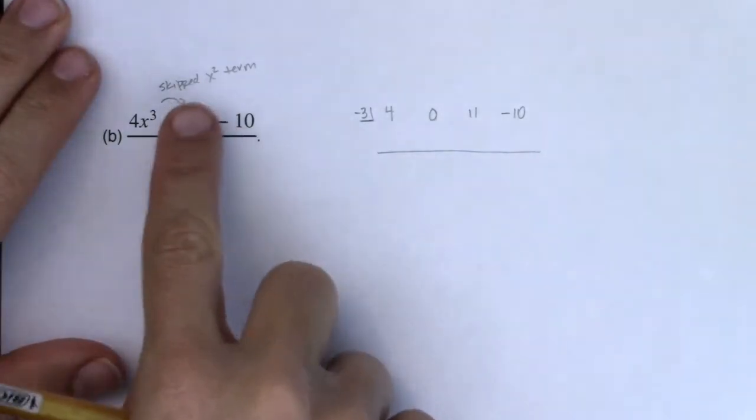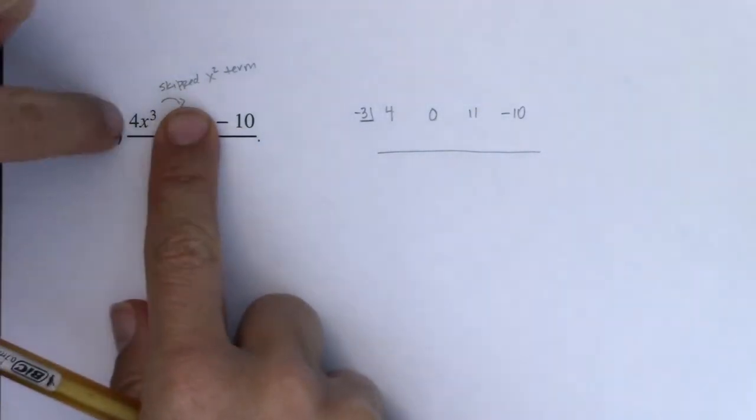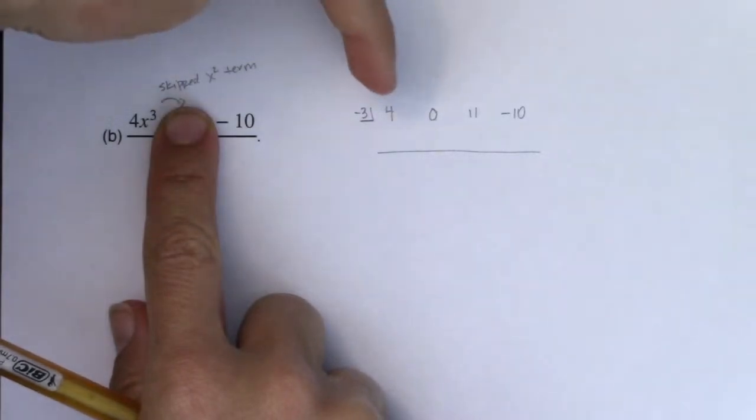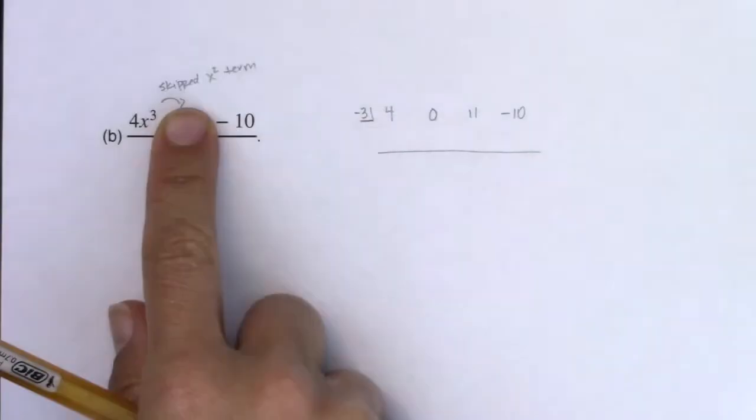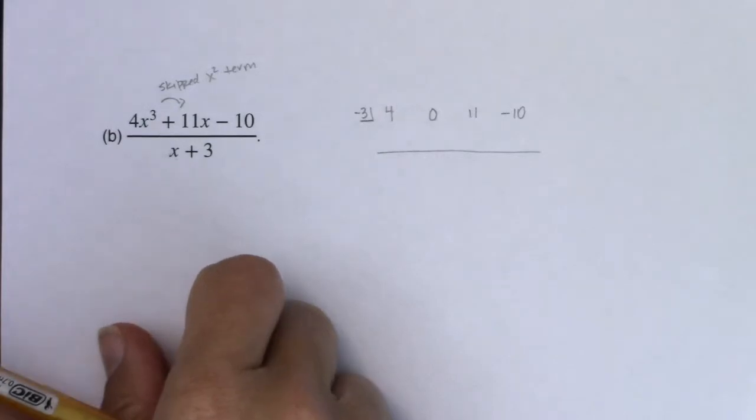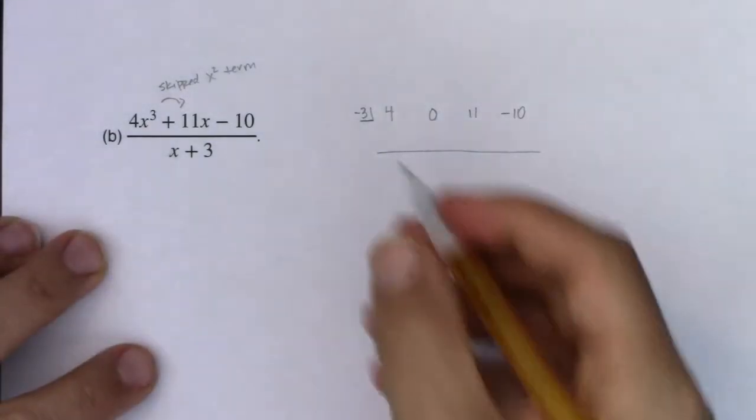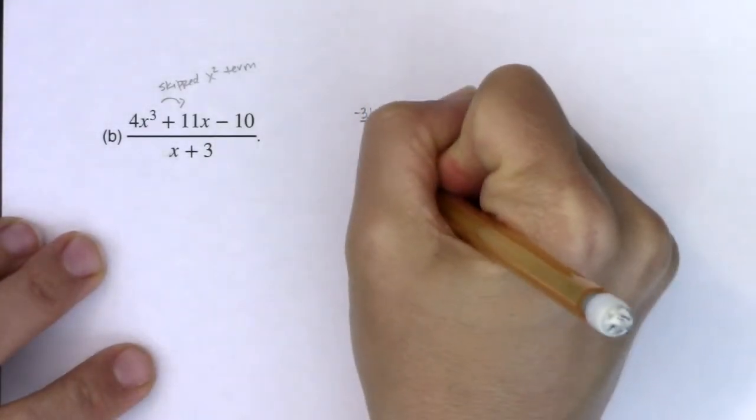And if, let's say my numerator was just 4x cubed minus 10, then I would have 4, 0, 0 and minus 10. So you just have as many zeros as you need placeholders for. And then we rock and roll.